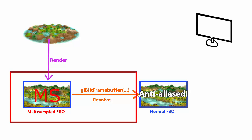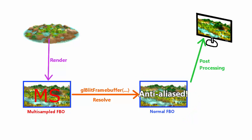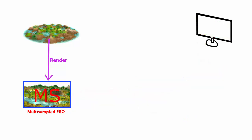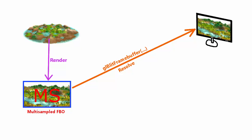This does involve one extra step than before, but now this FBO will contain an anti-aliased image of the scene that we can then use in the post-processing pipeline. Alternatively, if you don't want to do any post-processing, you can actually just resolve the multisampled FBO straight into the default framebuffer, which is the one that gets displayed on the screen.